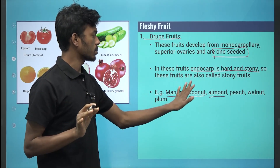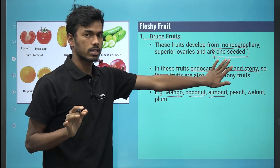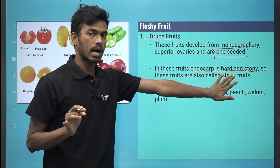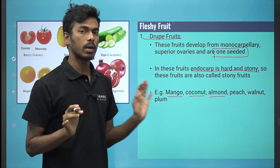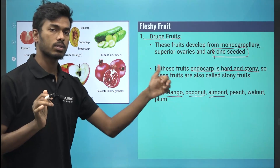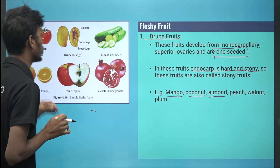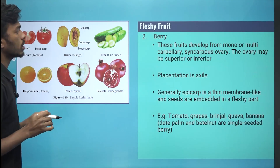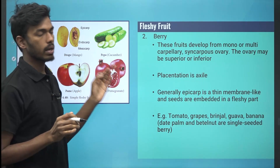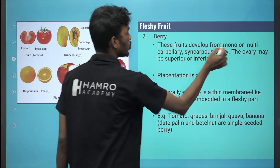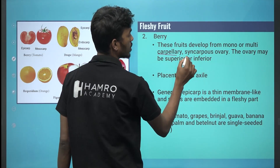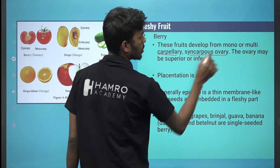It is a single-seeded fruit with a hard stone. For example, mango. This is drupe fruit. What is the berry? This is a multicarpellary syncarpus ovary.